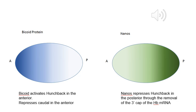As previously stated, the anterior-posterior axis of Drosophila is laid down through the establishment of various protein morphogens. Maternal mRNA is deposited in the egg before fertilization and is localized to a specific region. On the left, Bicoid mRNA is localized in the anterior and diffuses posteriorly. This results in a protein gradient that activates hunchback in the anterior and represses caudal in the posterior.